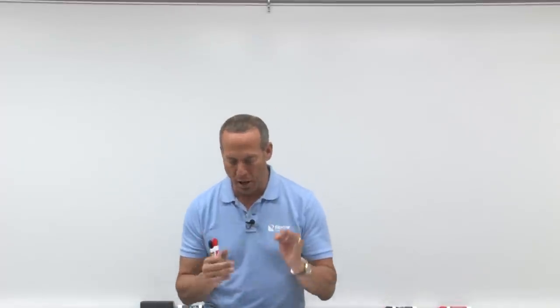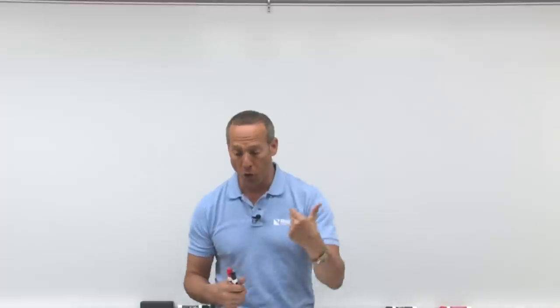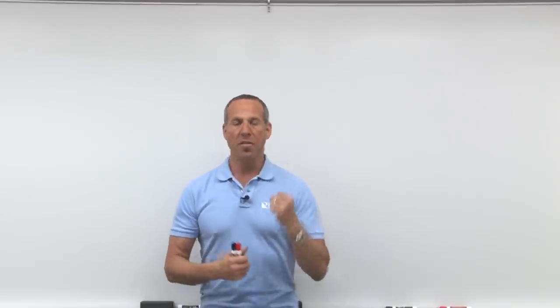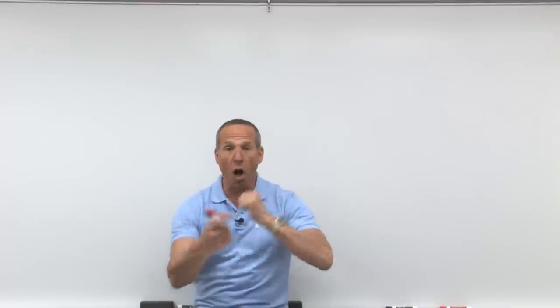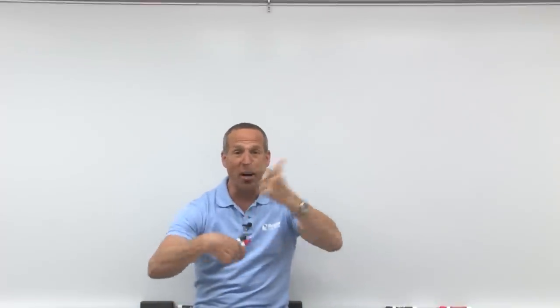A bond is a borrowing agreement in which the issuer promises to repay a certain amount of money, called the face or par value, to the purchaser. After a certain period of time called the term, at a certain interest rate. We're going to look at a couple of different rate terms: the effective rate, the yield, and the market — and all of those mean the same thing.